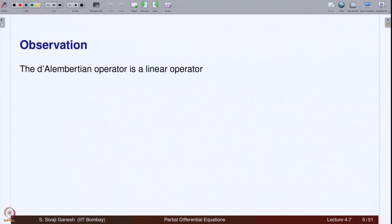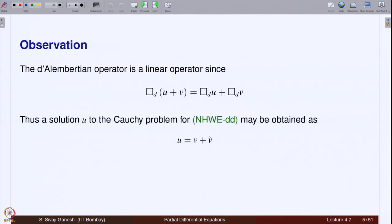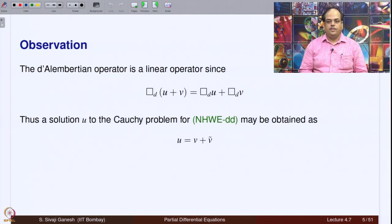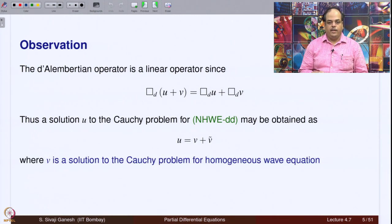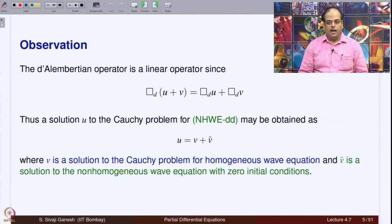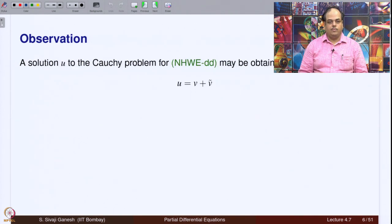The d'Alembertian operator is a linear operator, since the d'Alembertian applied to u plus v equals the d'Alembertian acting on u plus the d'Alembertian acting on v. Therefore, a solution to the non-homogeneous Cauchy problem may be obtained as the sum of two functions v and v-tilde, where v is a solution to the Cauchy problem for the homogeneous wave equation (without the source term), and v-tilde is a solution to the non-homogeneous wave equation but with zero initial conditions.